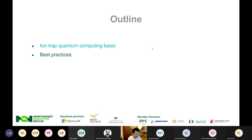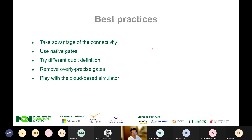With that, we finish the first section of our workshop on ion trap quantum computing basics. I hope you learned a lot of intuition about how ion trap computers work. Next, we will move to best practices — suggestions and tips that I hope will help you in your hackathon. I've summarized five best practices: take advantage of the all-to-all connectivity, use native gates, try different qubit definitions, remove overly precise gates, and play with the cloud-based simulator.